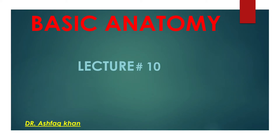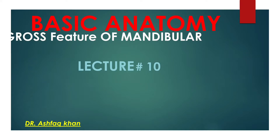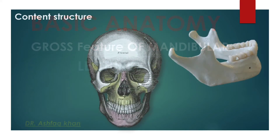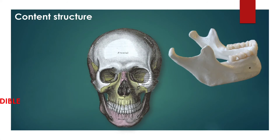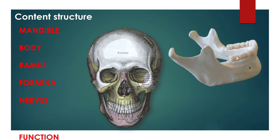Hello everyone, welcome to another anatomy tutorial where this time I am going to be talking about the gross features of the mandible. The content structure of the mandible consists of horizontal mandible, body, ramus, foramina, nerves, and function.